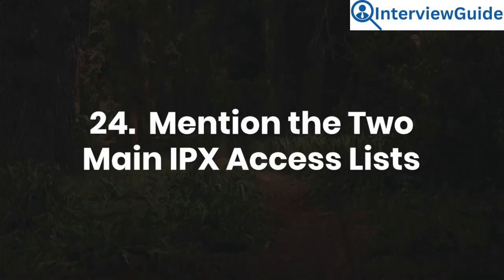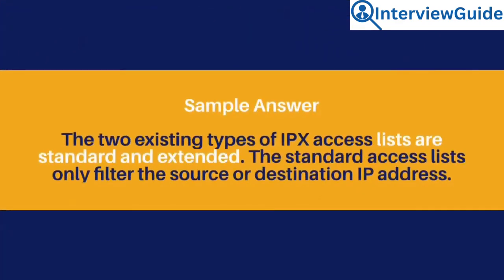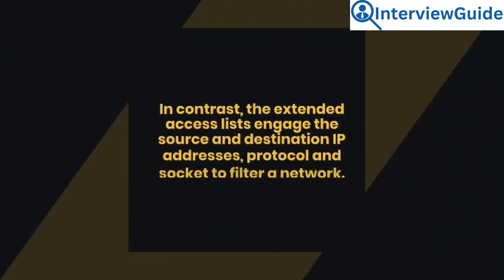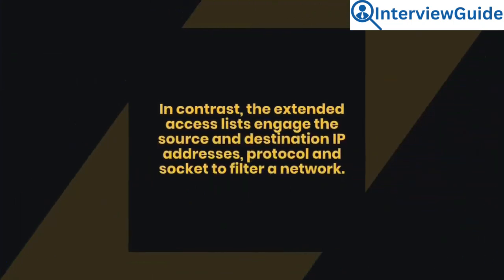Question 24: Mention the two main IPX access lists. The two existing types of IPX access lists are standard and extended. The standard access lists only filter the source or destination IP address. In contrast, the extended access lists engage the source and destination IP addresses, protocol, and socket to filter a network.